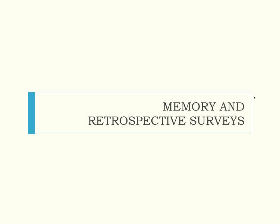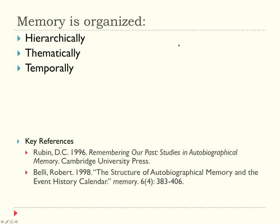Now let me talk more generally about memory. From cognitive psychology we know that memory is organized in hierarchies — certain kinds of memories are nested inside other ones. The most salient, significant events come first, and others get nested inside those. Thematically, people organize their memories in terms of domains of their lives — they might associate housing, marriage, family, and wealth in one domain, and work-related memories in another. These memories are often separated from each other in how they're stored in the brain.